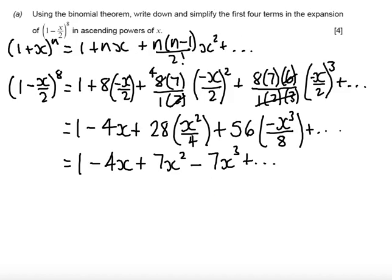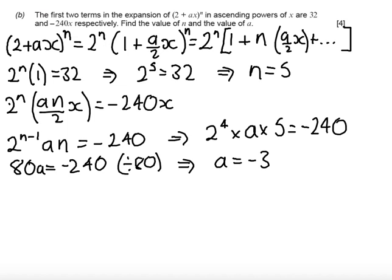Let's look at how this is marked. For the first expansion, there is a standalone B1 mark for each term correctly obtained, including the sign — the signs must be correct. In part b, there's one standalone mark for identifying the first term as 2^n, and another for concluding n equals 5. A further standalone mark is for correctly identifying the second term, and the final mark is for finding a equals -3.